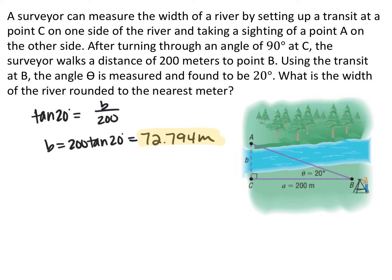This has been right triangle trigonometry. SOHCAHTOA: sine is opposite over hypotenuse, cosine is adjacent over hypotenuse, and tangent is opposite over adjacent. This only works if you have a right triangle.